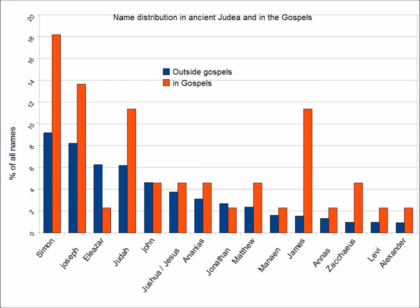I have yet to see the mythicists counter this argument, but there are possible objections. In order to counter it, the mythicists need to explain how the correct distribution of names got into the Gospels if they were fiction. One point is that the argument refers to the distribution of large numbers of names. It cannot be applied to individual names, and therefore the argument in its strong form concludes that most of the characters in the Gospel originated as historical figures rather than all of them, leaving room for Jesus to have been inserted amongst characters who really existed.